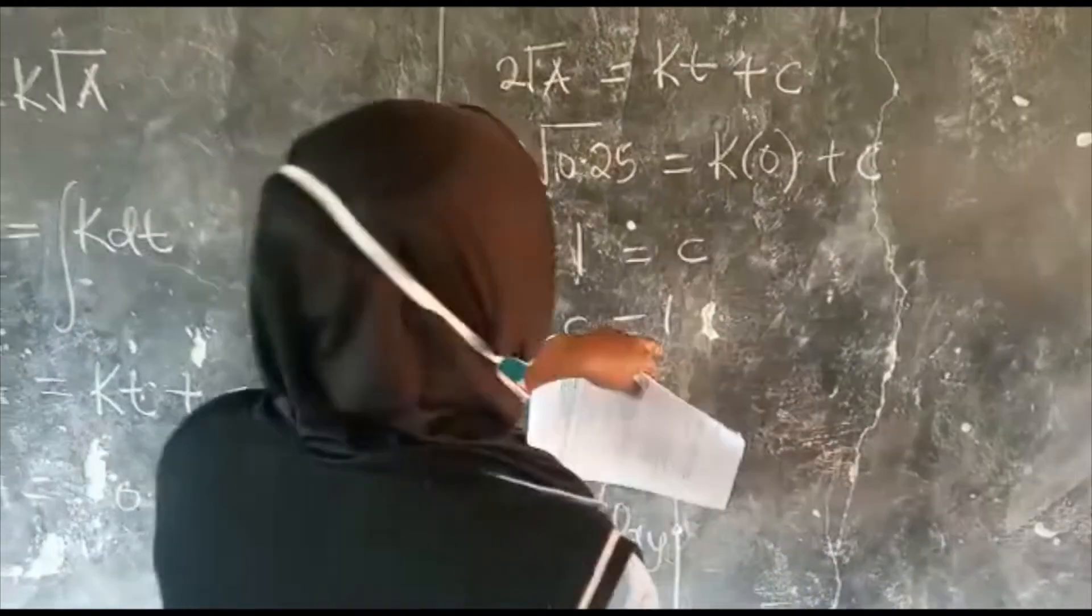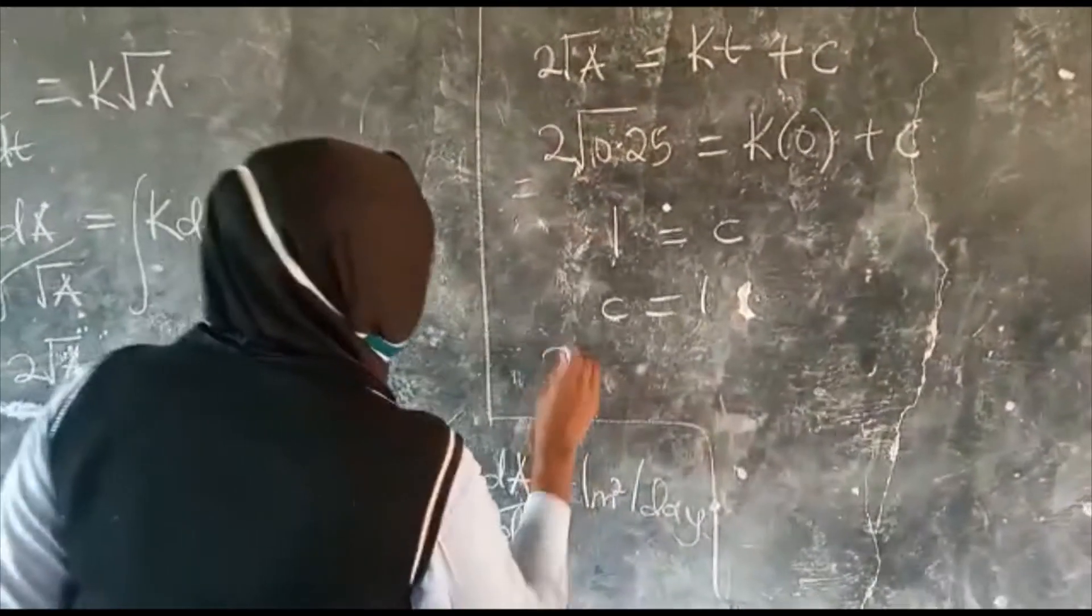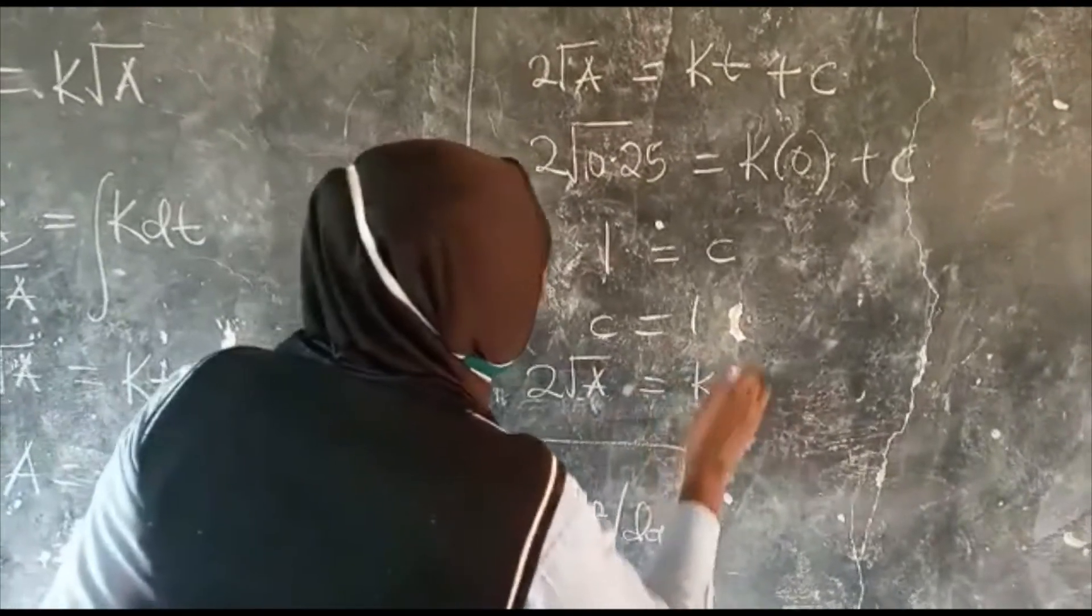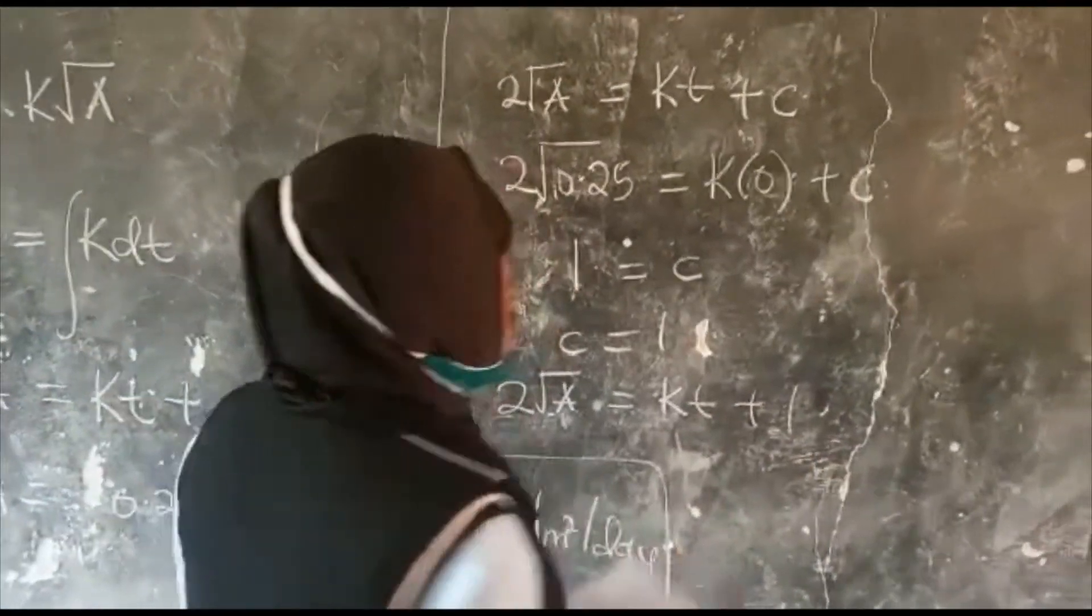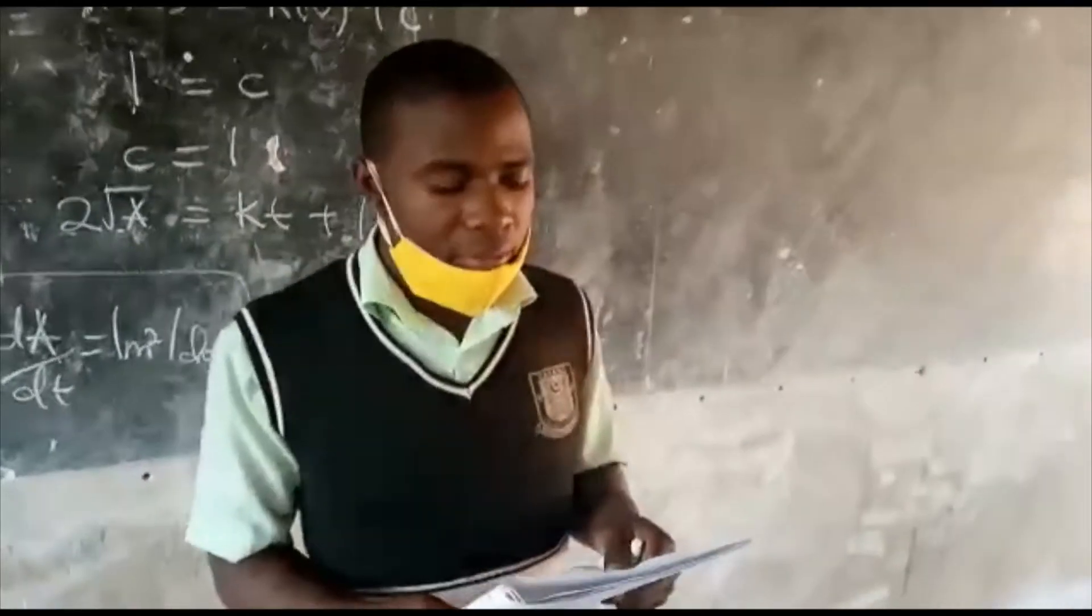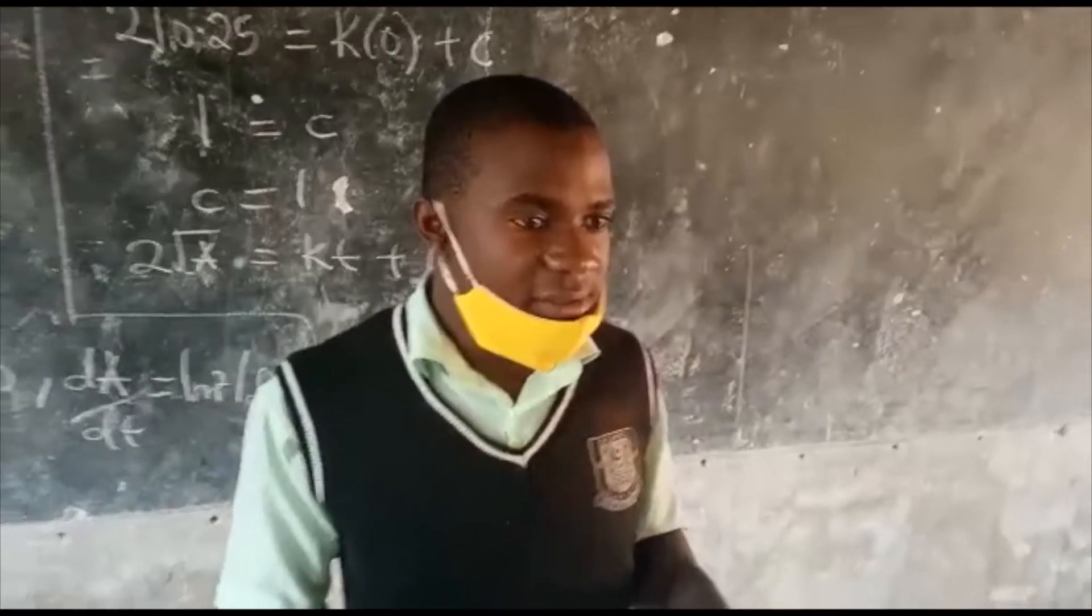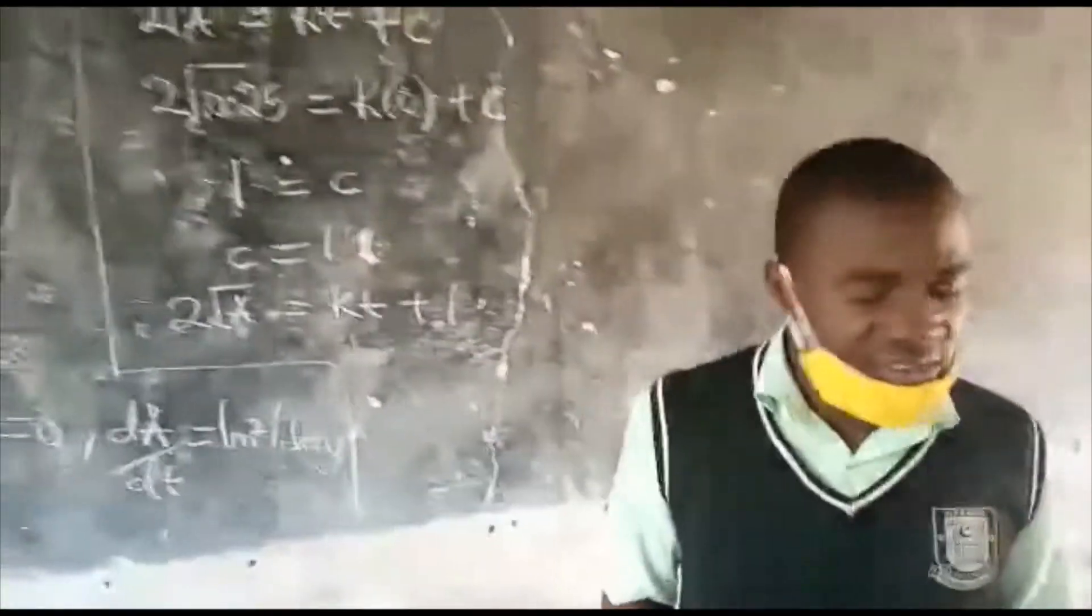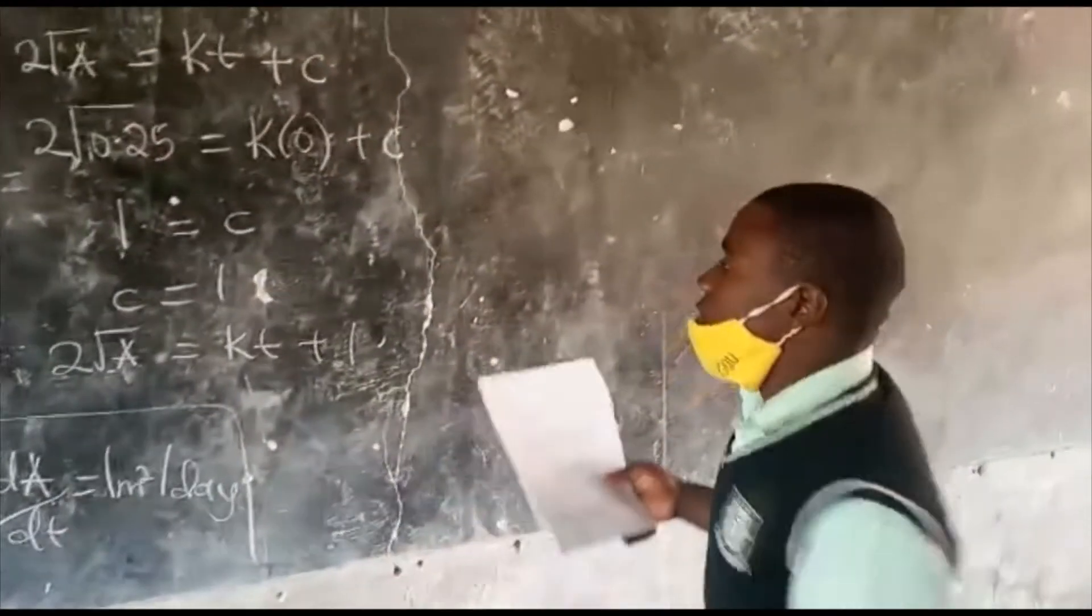I am going to put the value of c, and this is to get 2 root A equal to kt plus c is 1. This is my equation. My name is Mchiri Mahat, from Aga Khan Islamic School Mukono. I am going to continue from where my sister has ended, from here.